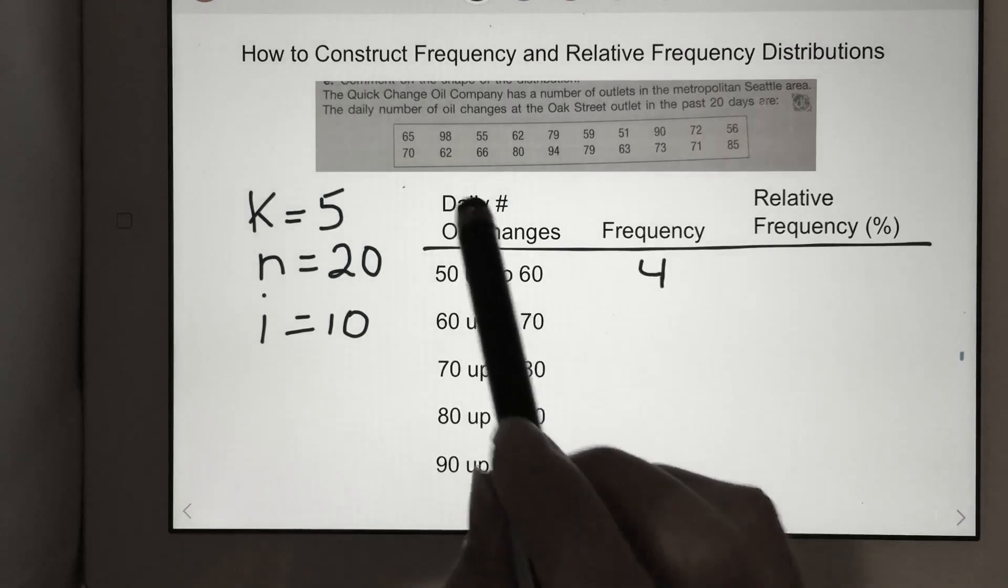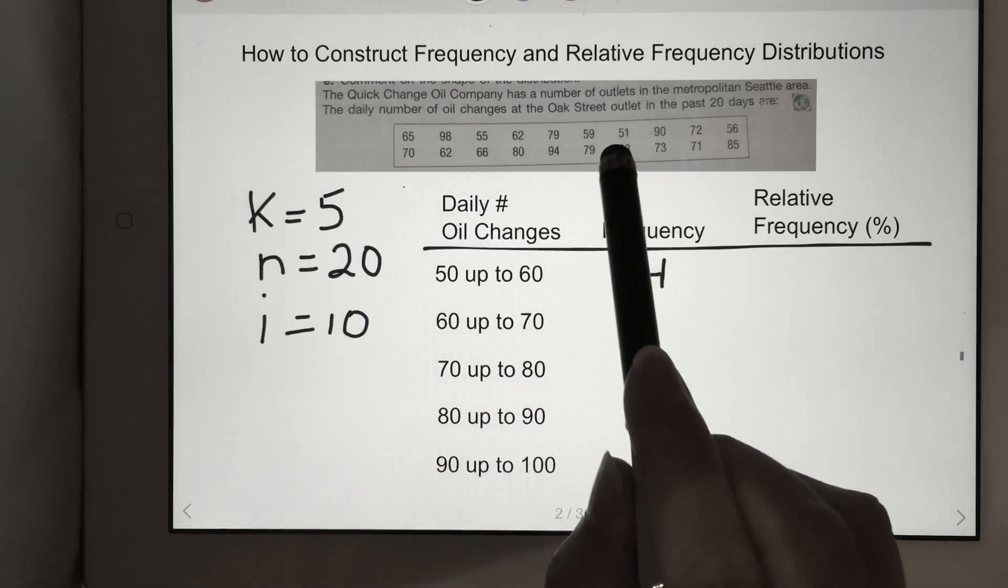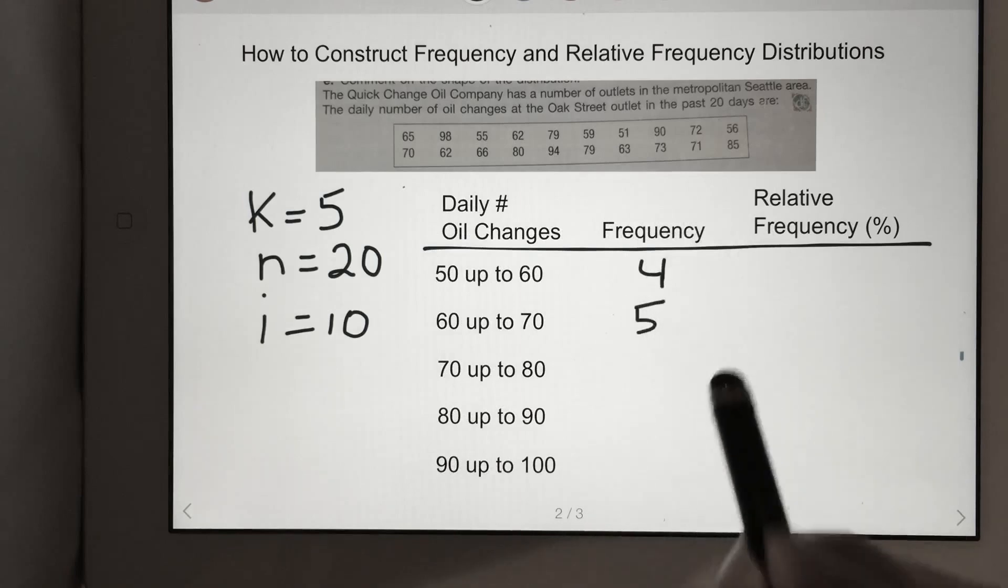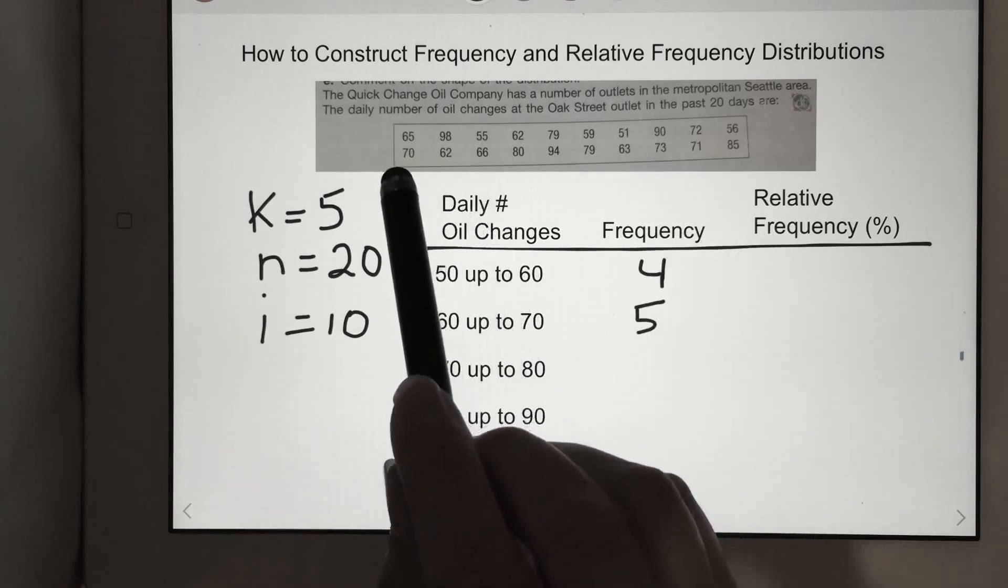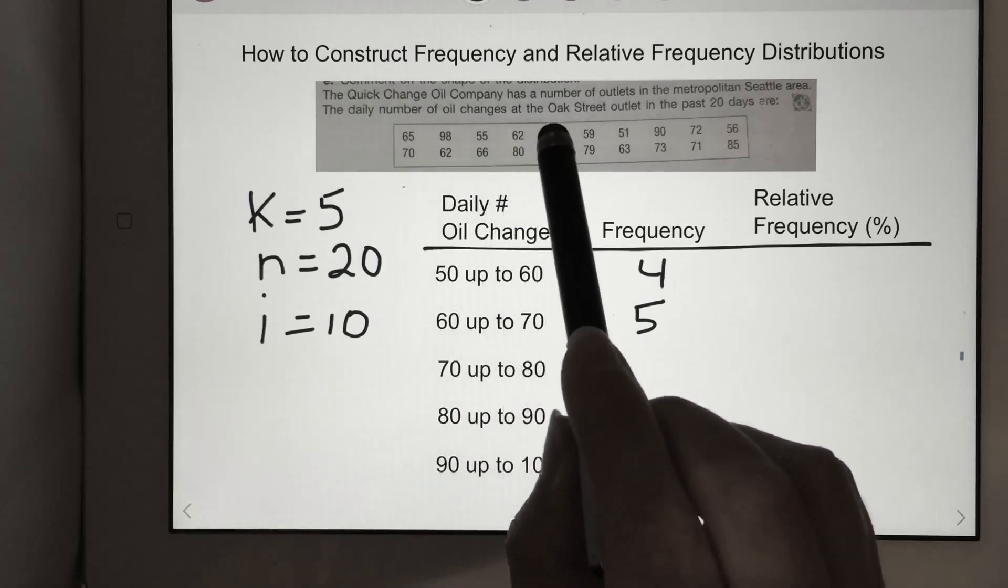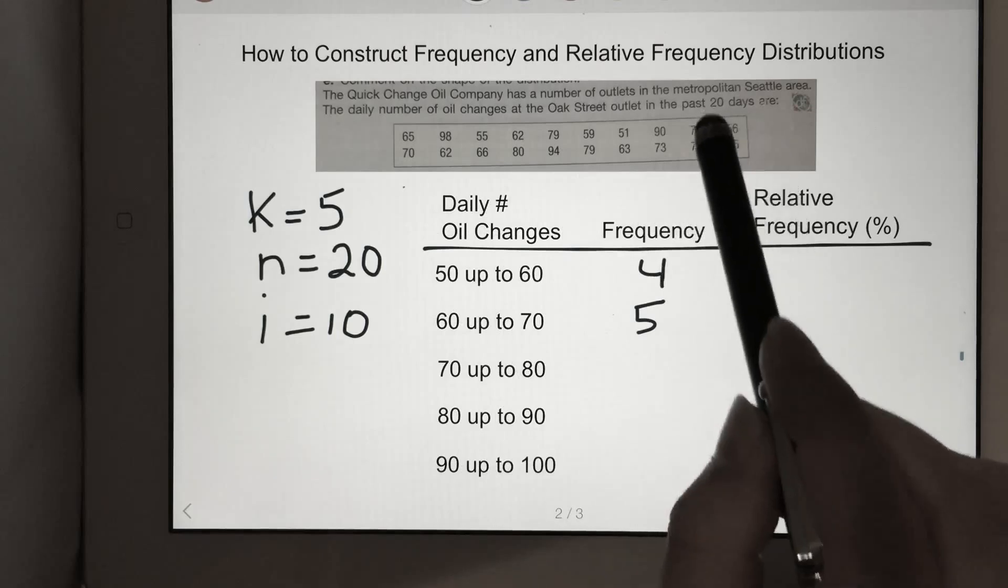60 up to 70: 1, 2, 3, 4, 5. 70 up to 80—so we are including 70: 1, 2, 3, 4, 5, 6.